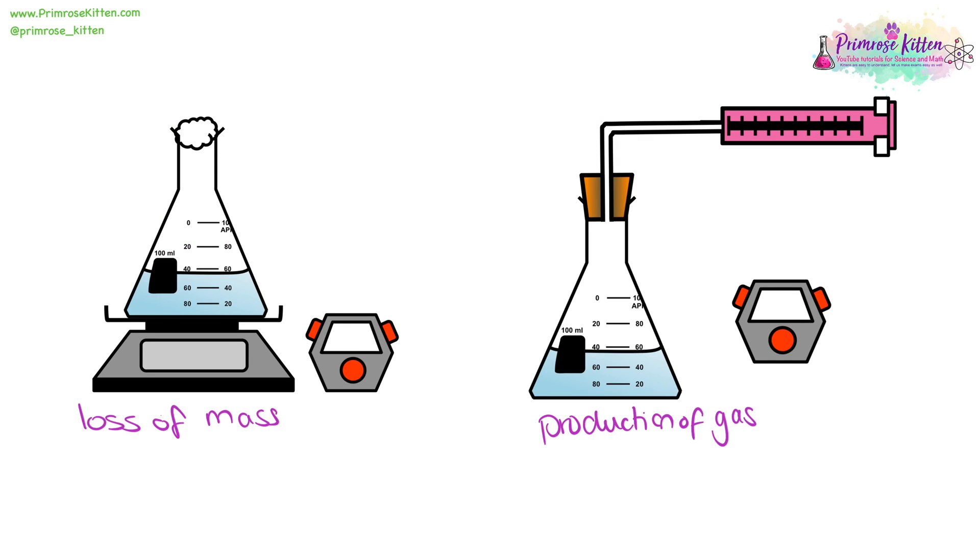There are a range of different ways you can follow a reaction. For example, you can look at the loss of mass. This would be good if you were adding something solid, like marble chips, into a liquid, and you knew that a gas was going to be produced. The gas will just go off here through the cotton wool and out, and the mass will go down.